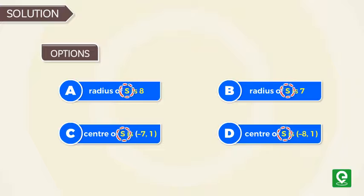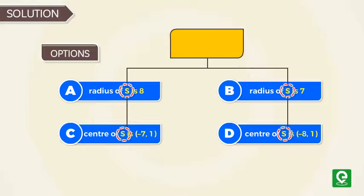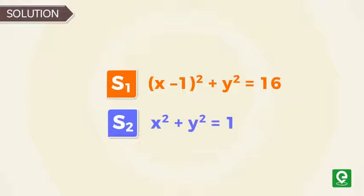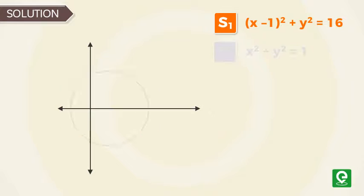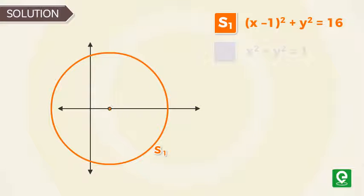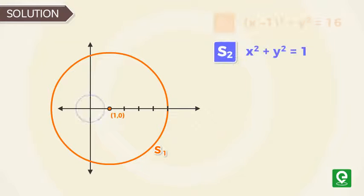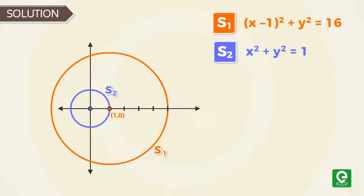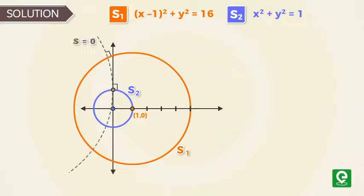Solution. From the problem it is evident that we need to find the equation of the circle S. Let us call the two given circles S₁ and S₂, where S₁ is the circle with center at (1, 0) and radius 4, and S₂ is the other circle with center at origin and radius 1. Here we are asked to find the equation of a third circle S = 0 which is orthogonal to the two given circles and also passes through (0, 1).